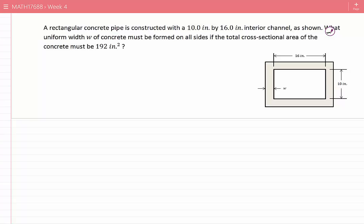A rectangular concrete pipe is constructed with a 10 inch by 16 inch interior channel as shown. What uniform width W of concrete must be formed on all sides if the total cross-sectional area of the concrete must be 192 square inches?